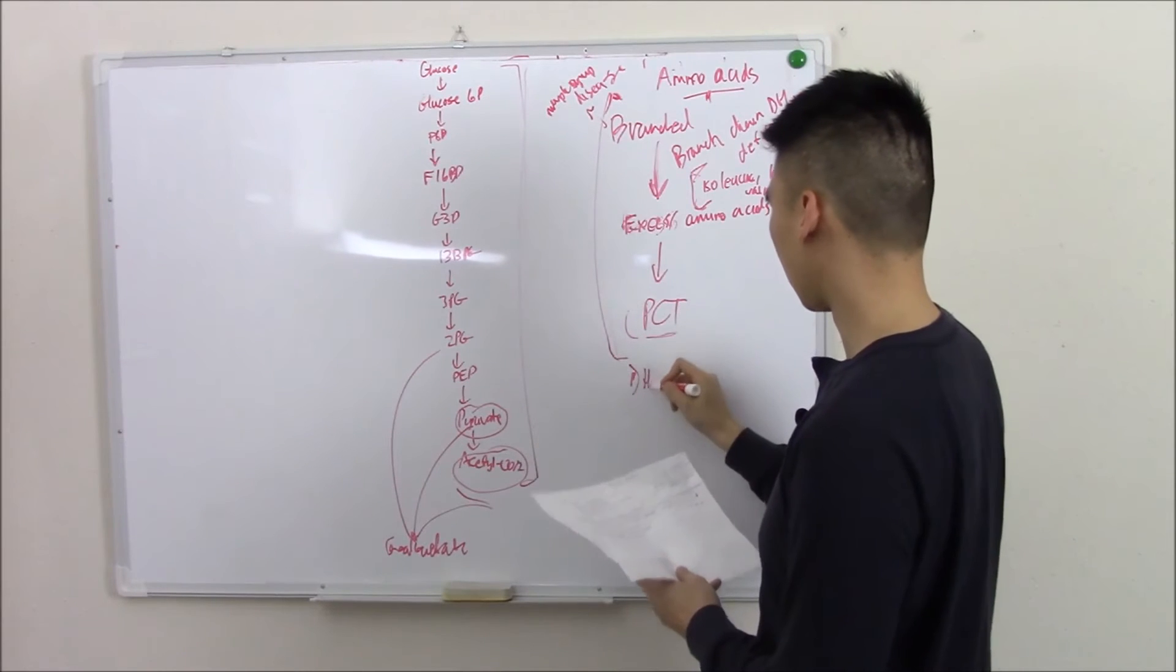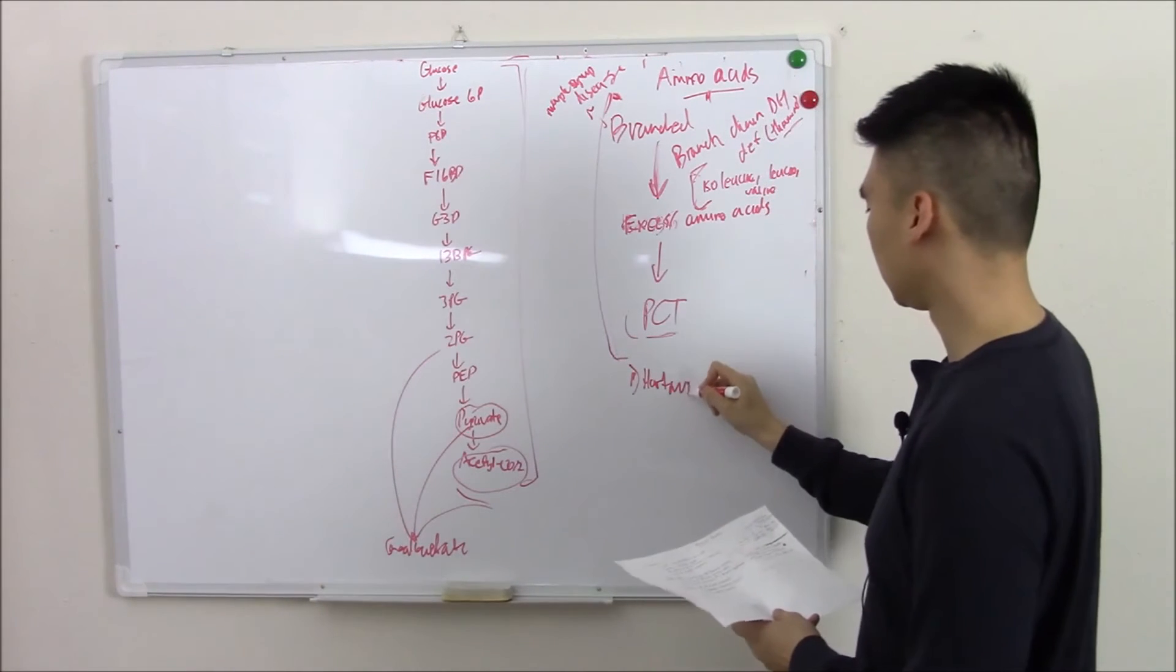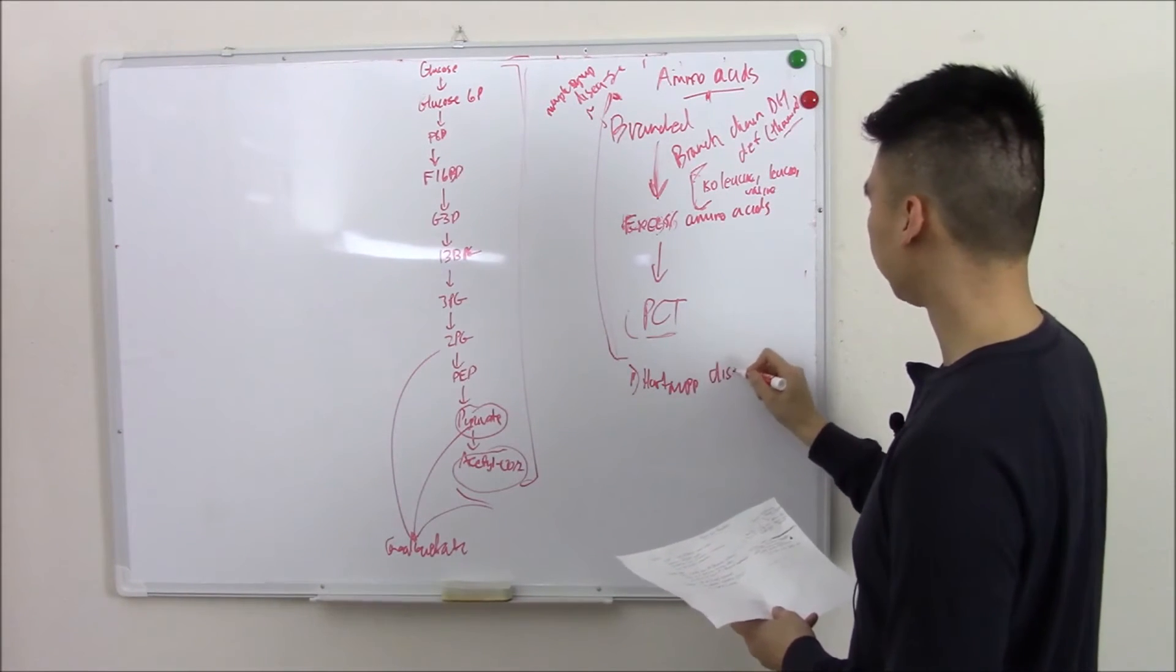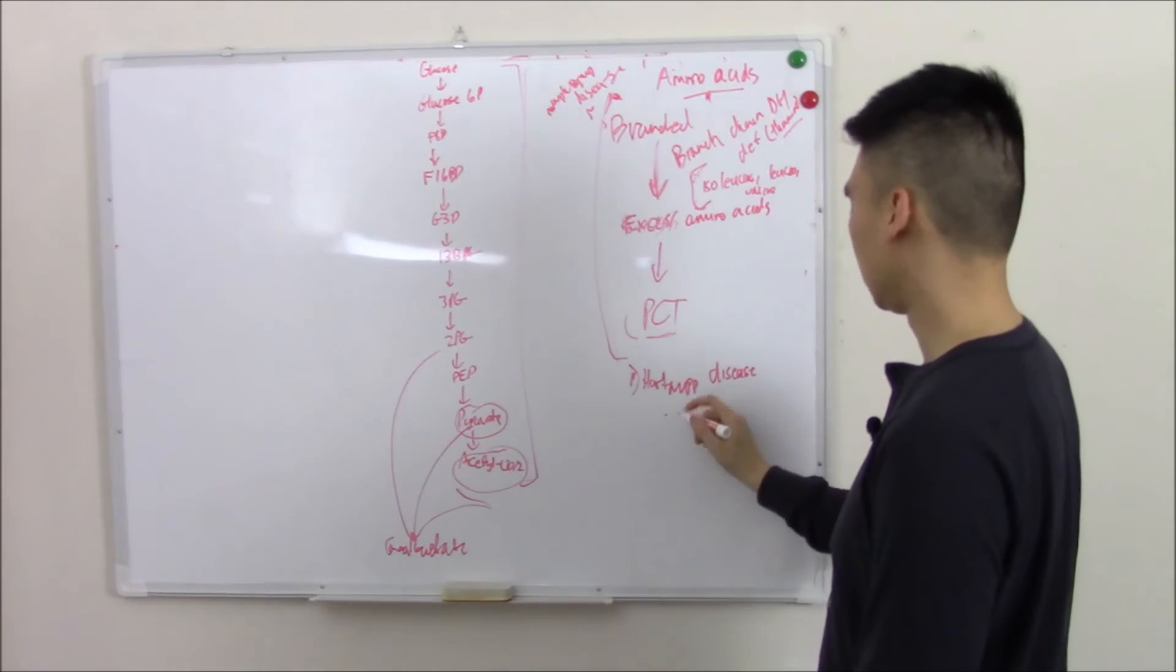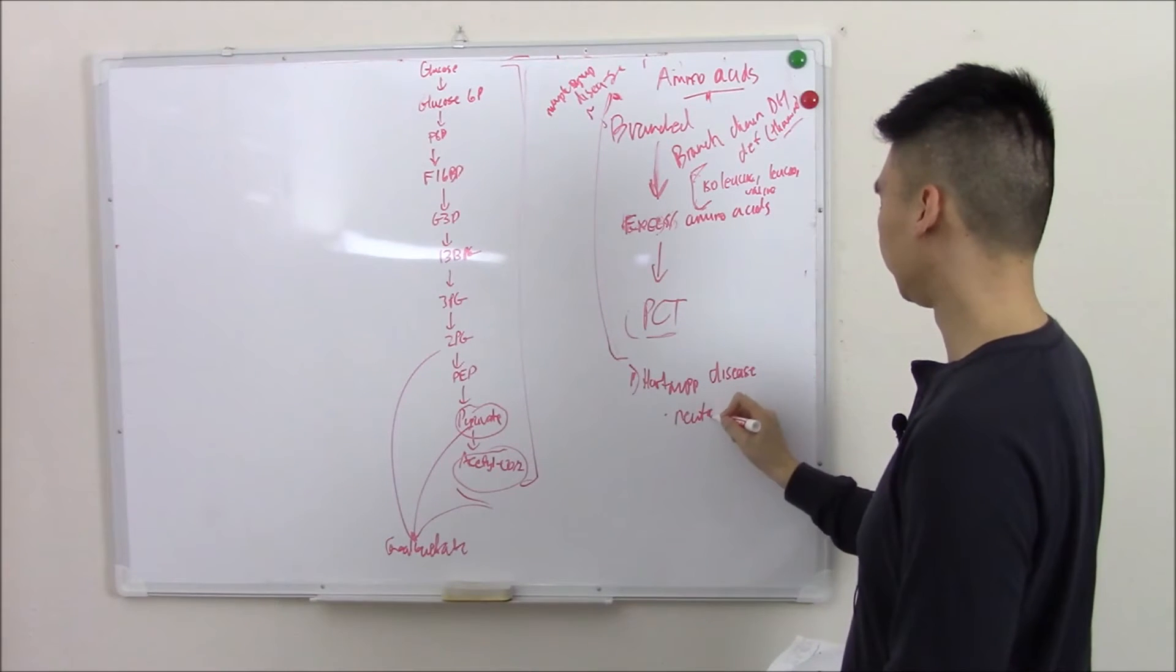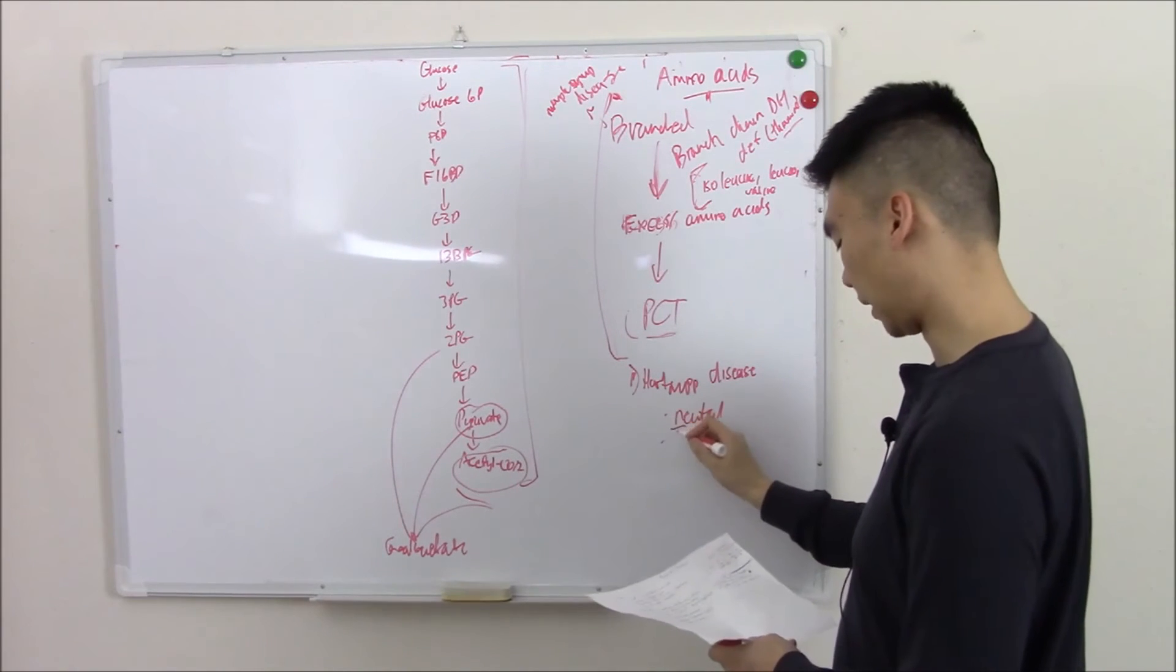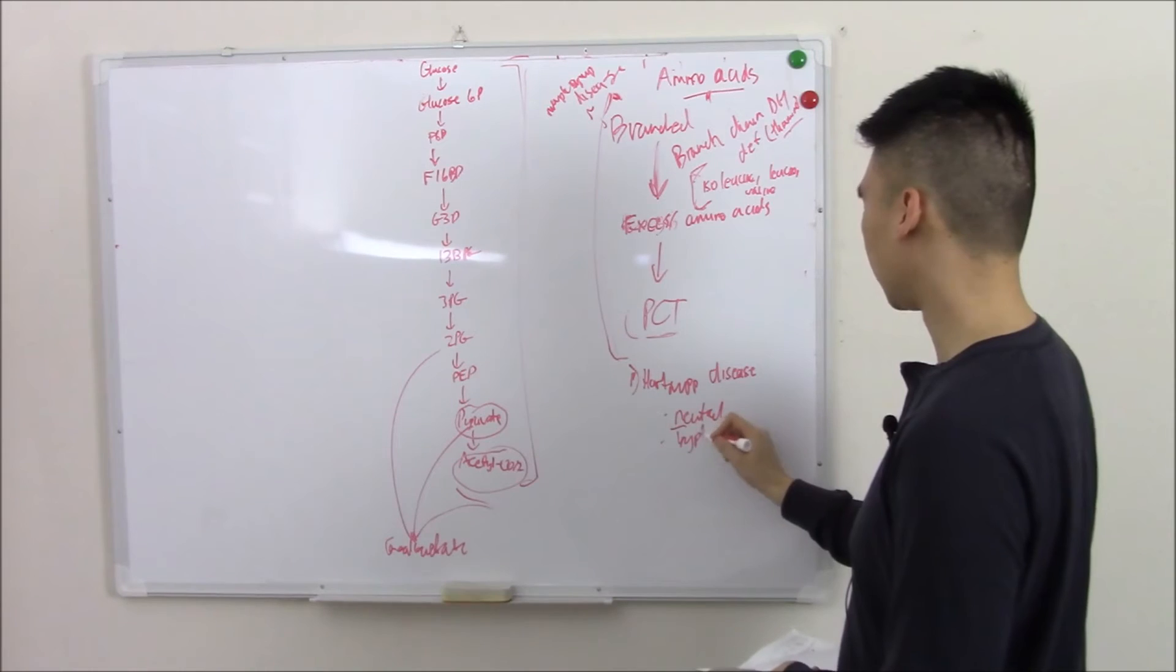One of them is called Hartnup disease. And that affects neutral amino acids. Neutral. Like tryptophan.